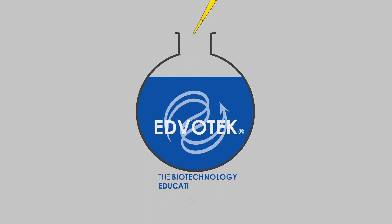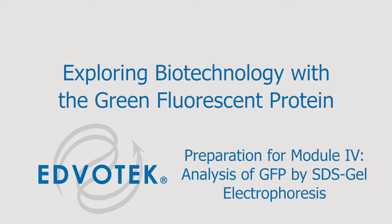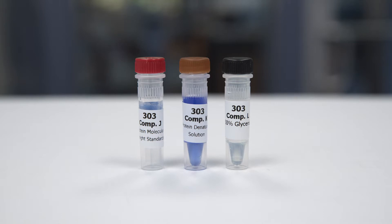Edvotek instructional videos presents pre-lab preparations for exploring biotechnology with the green fluorescent protein, preparation for module 4: analysis of GFP by denaturing SDS gel electrophoresis. For this prep you will need tubes of protein molecular weight standards, protein denaturing solution, 50% glycerol, ethanol, and glacial acetic acid.